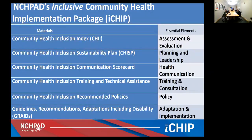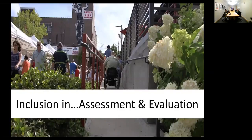This is the original iCHIPS — the categories are on the right, and the inclusion piece created for each category is in the larger column on the left. The essential elements include: assessment and evaluation, planning and leadership, health communication, training and consultation, policy, and adaptation and implementation. We've created resources for each of those categories, targeting audiences such as educators, fitness professionals, and healthcare professionals.